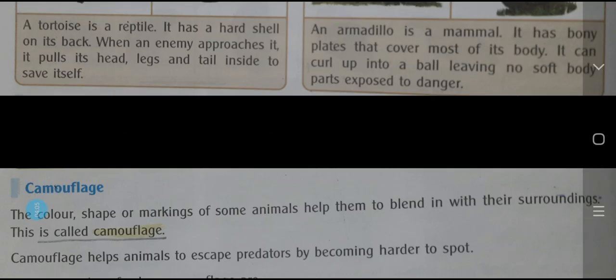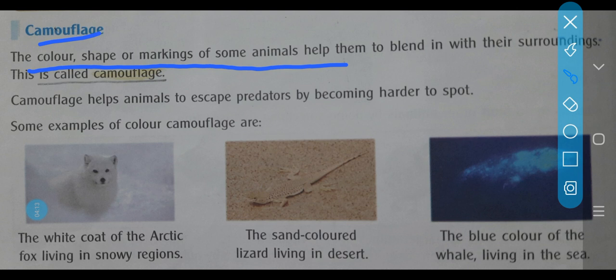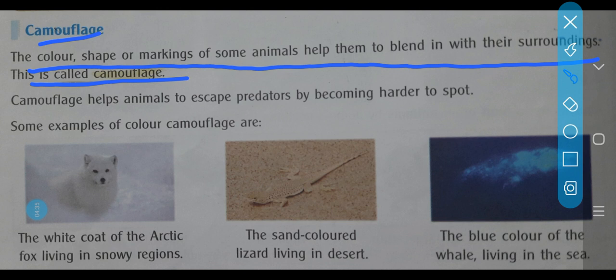Now next comes camouflage. What is camouflage? The color, shape, or markings of some animals help them to blend in with their surroundings — this is called camouflage. Camouflage means that animals use the special color or skin color of their body to protect themselves from enemies. God has given them this extra quality. That is what we call camouflage.